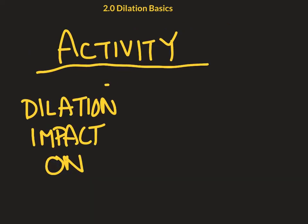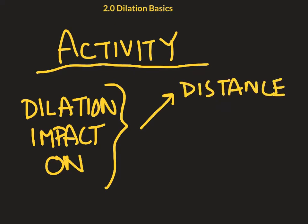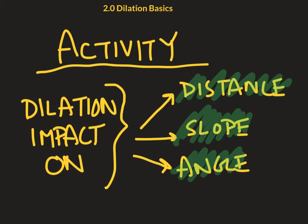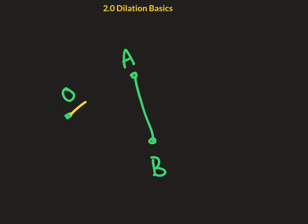This video ends here, but your activity is just beginning. There's a nice activity that's going to have you now using GeoGebra. Find out the impact of dilation on distances. How does distance get affected by a dilation? On slope. How does the slope get impacted when you dilate an object? And finally, on angles. So when you're done that, you should be able to say, oh, when I dilate something, this is what it does to the distances of the shape. This is what it does to the slope of the sides of that shape. And that's what this does to the angle.